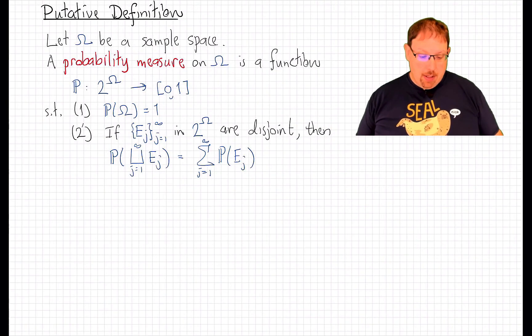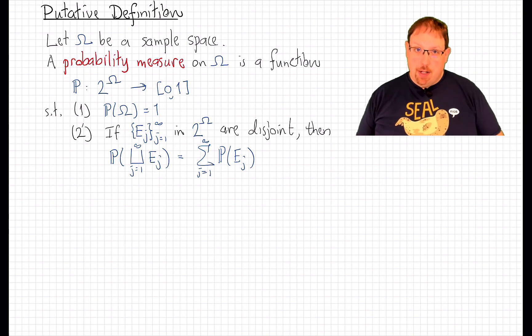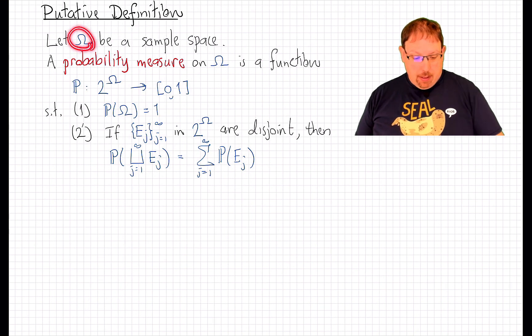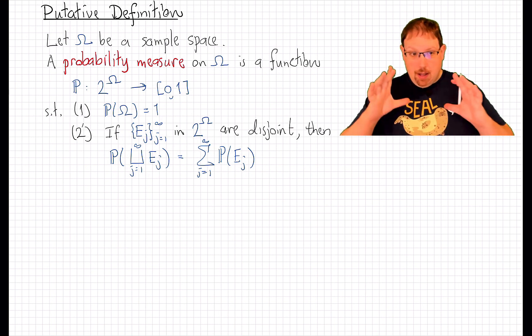We are going to make the standard assumption that probability measures are countably additive. And so now, let's write down our putative definition of what a probability measure is. We start with a sample space, omega. Like, for example, the set of all sequences of heads or tails,